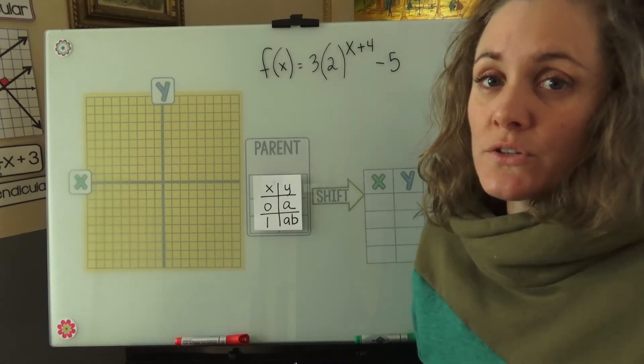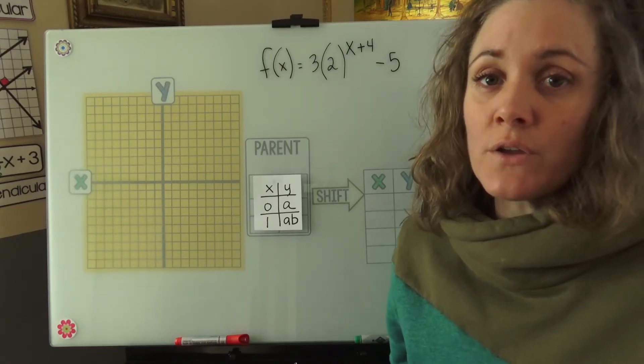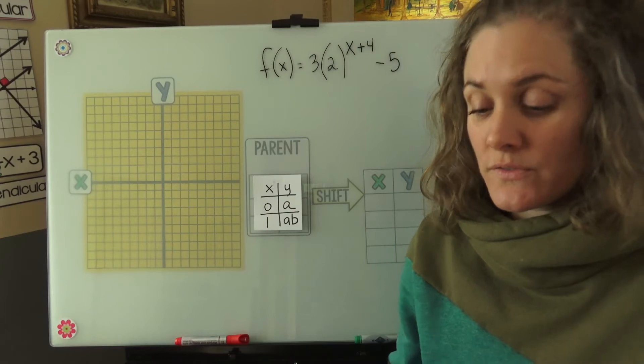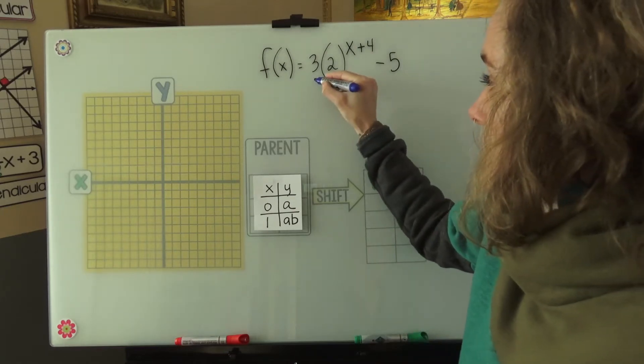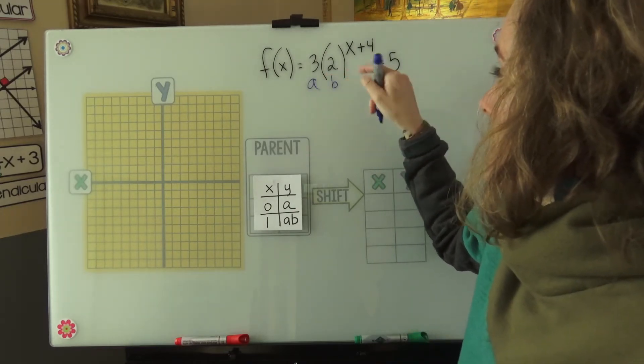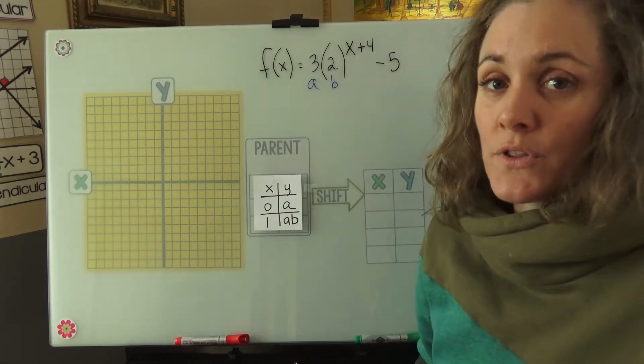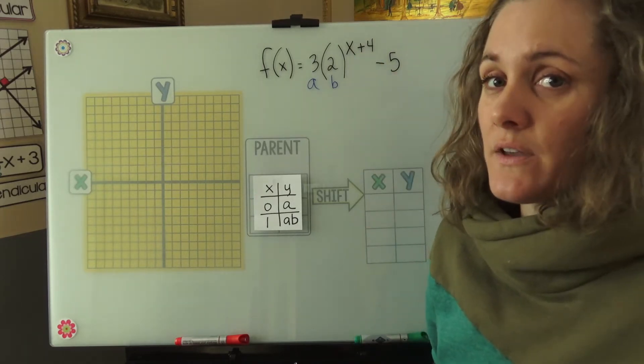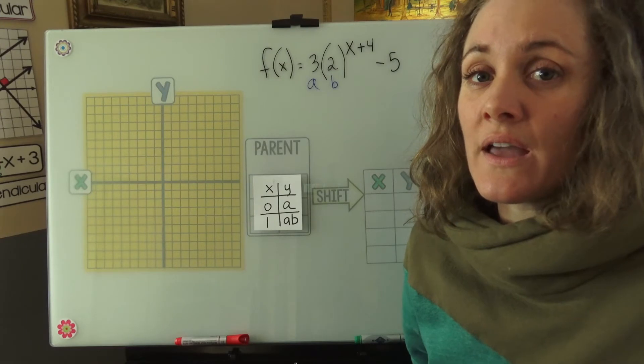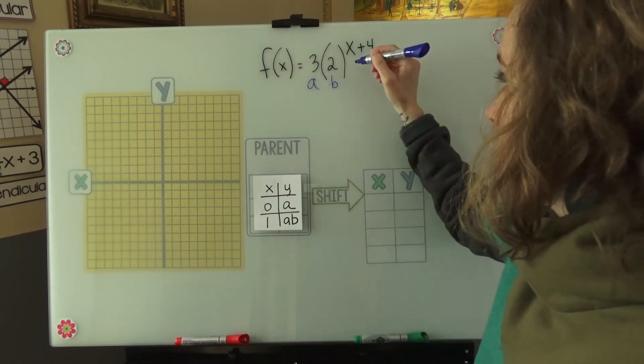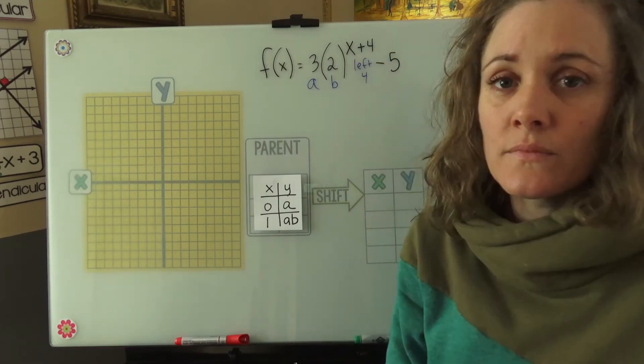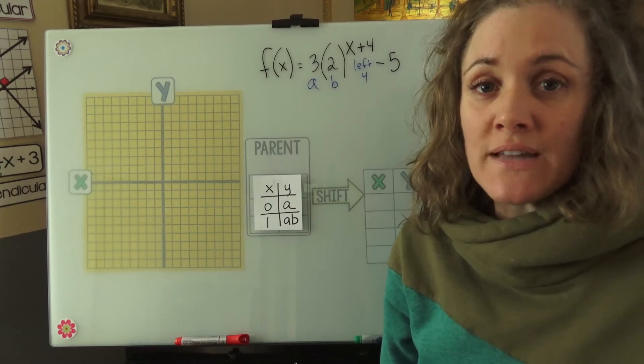The first thing we want to do is identify the a value, the b value, and the x and y shifts. So our a value is 3, our b value is 2, and we have a plus 4 with our x shift and a minus 5. That plus 4 will be a left 4 because it's opposite, and that minus 5 will be a down 5.